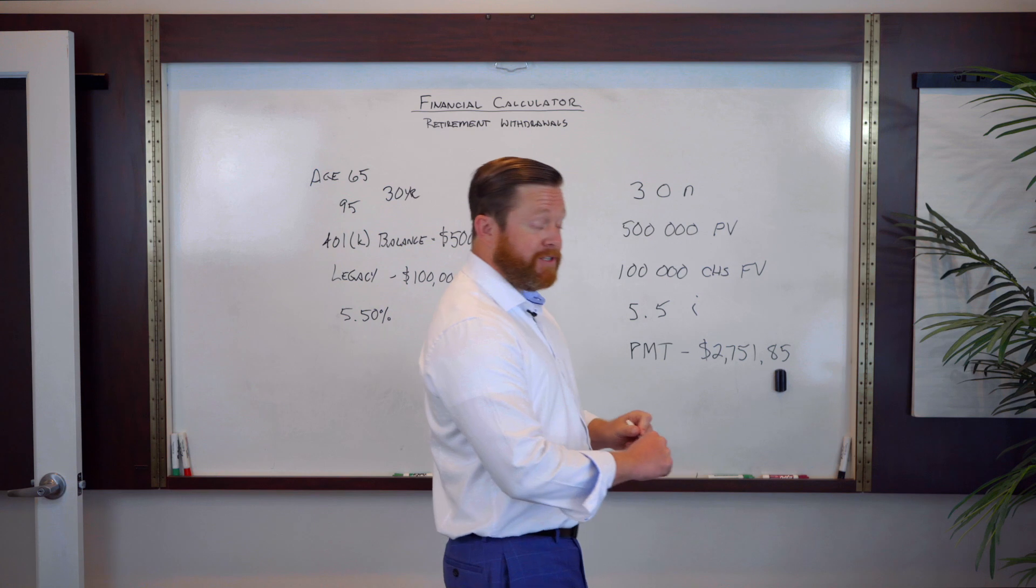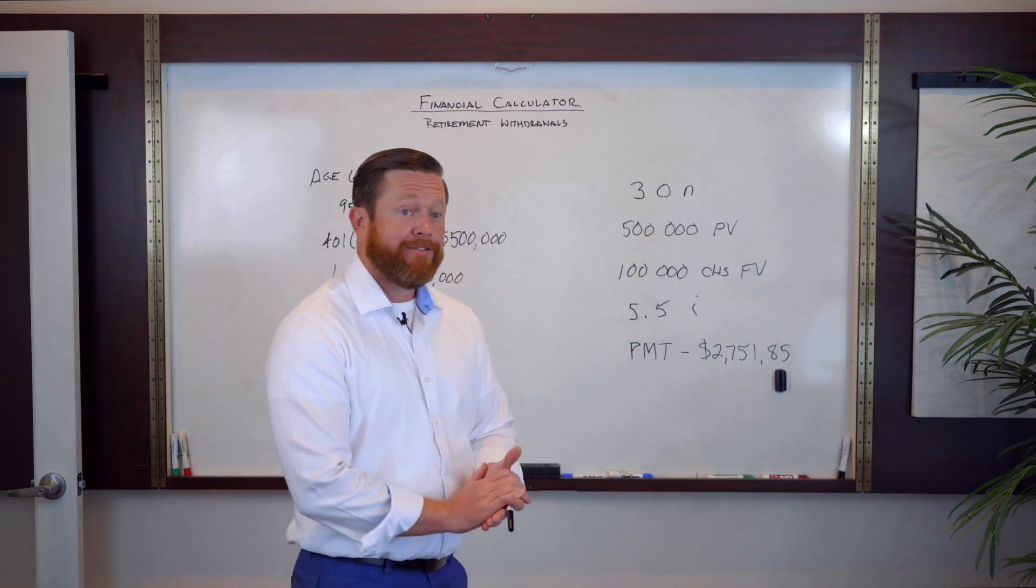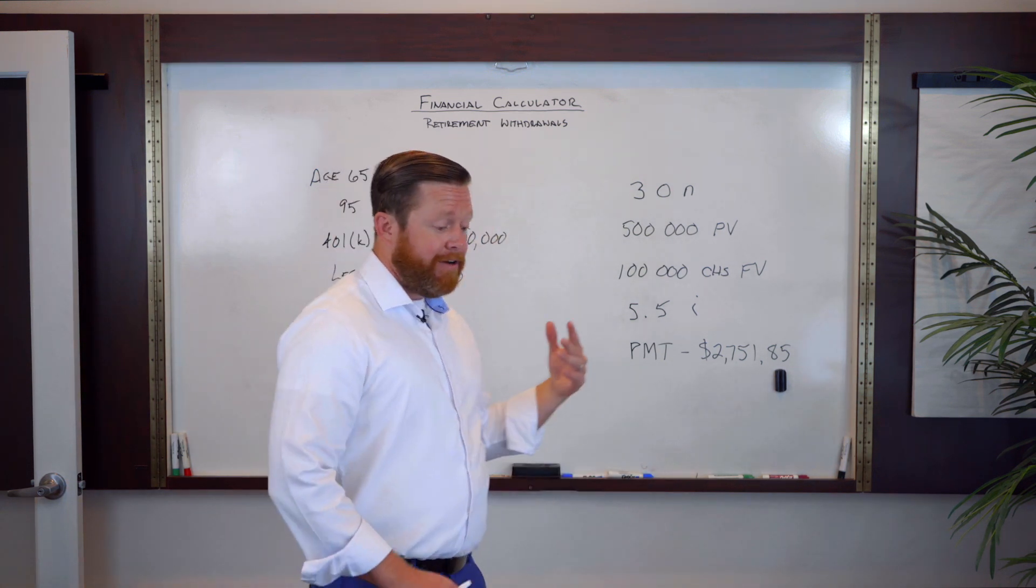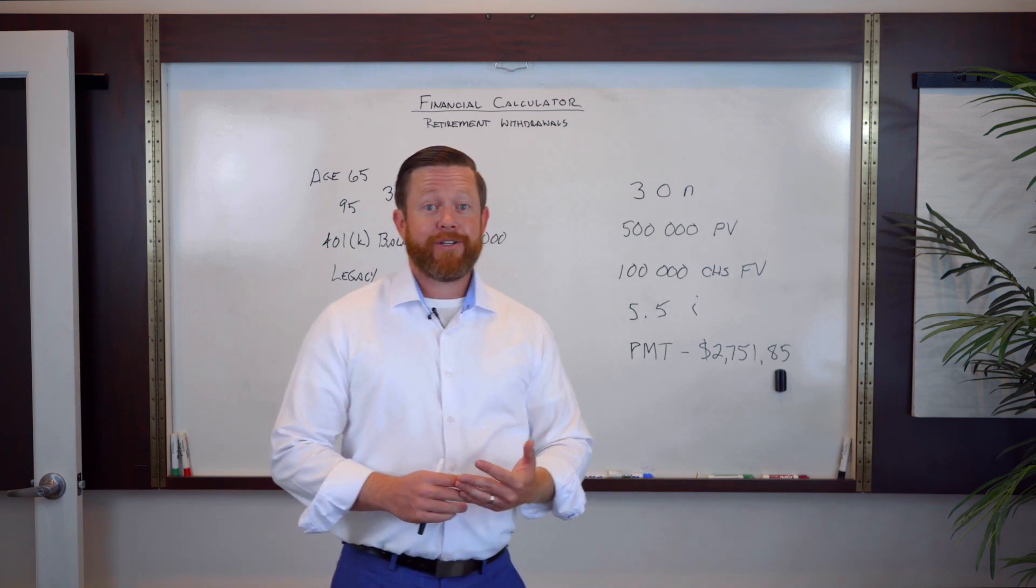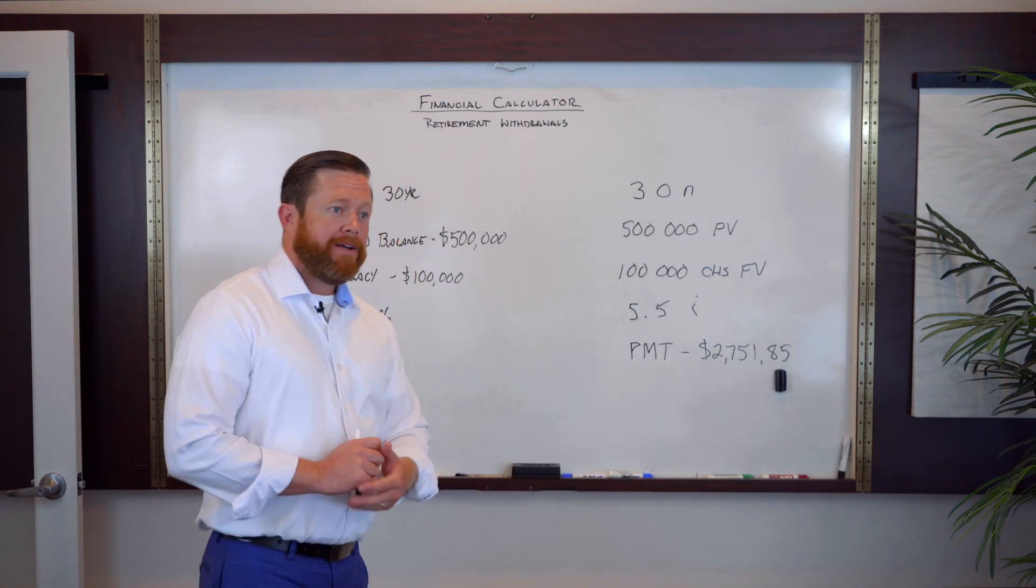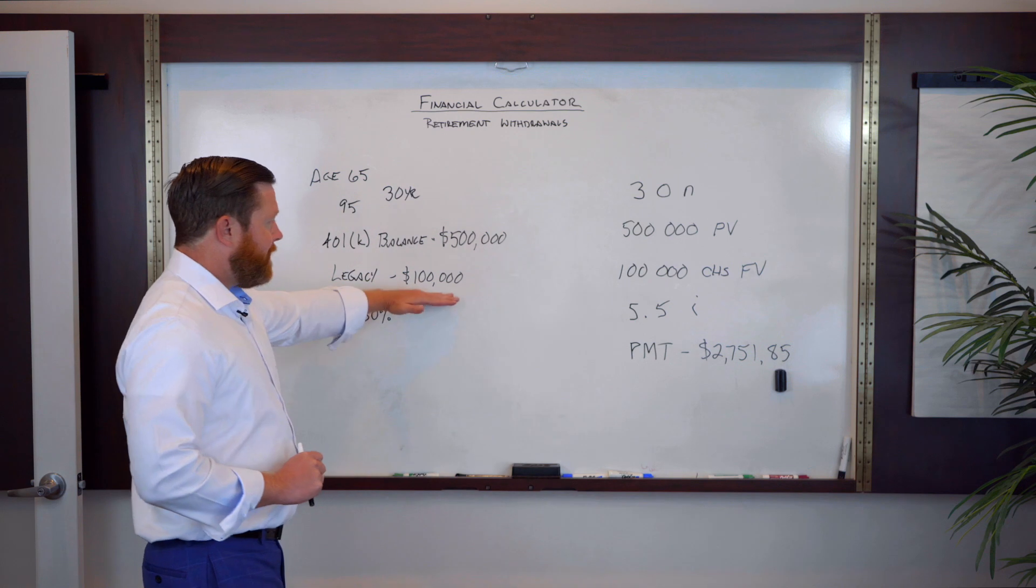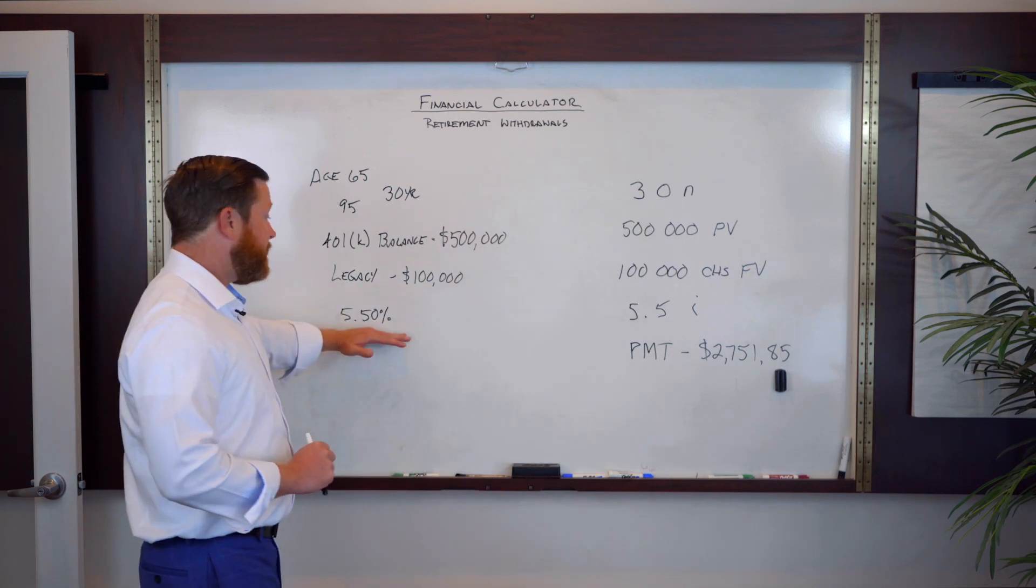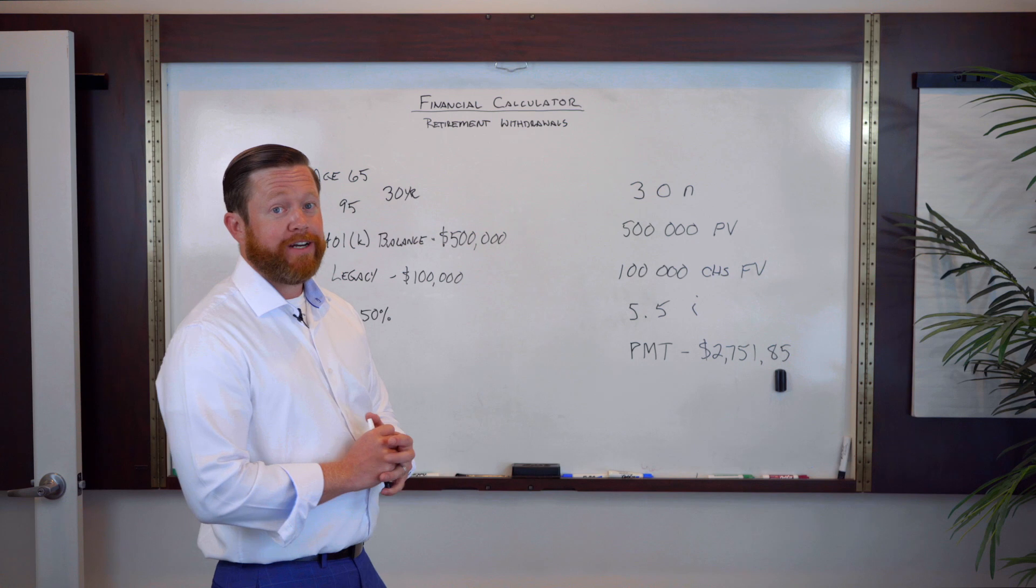So that answers the question, how much can I take out of my 401k or IRA on a monthly basis to make sure that number one, don't run out of money. But most importantly that I end up with my estate planning objective at a conservative 5.5% rate of return.